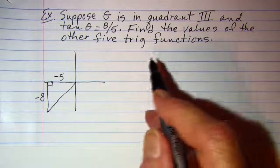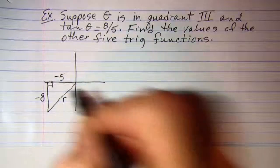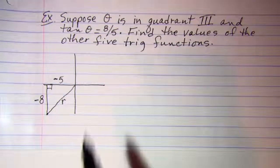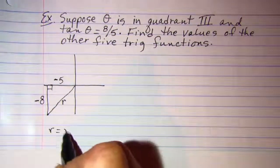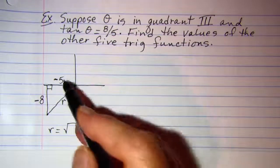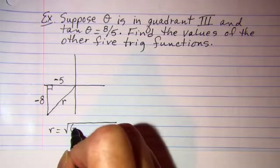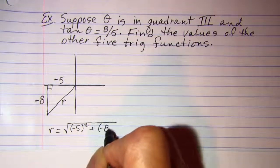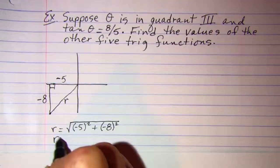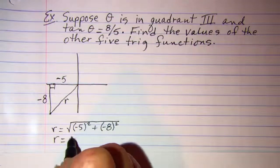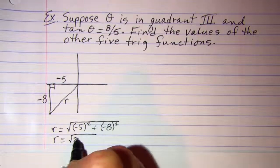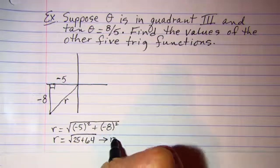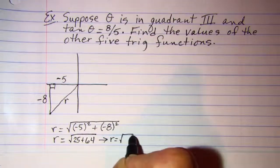So to find the values of the other five trig functions, I'm going to need my length of my hypotenuse or r. I know that r is the square root of x squared plus y squared. So my r value is going to be 25 plus 64. r is the square root of 89.